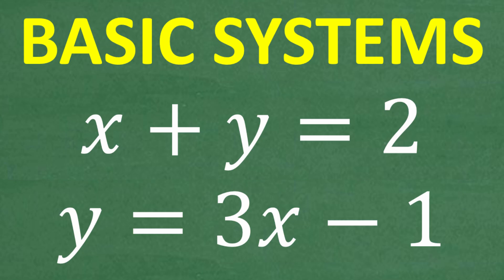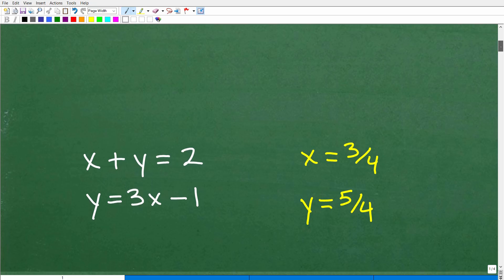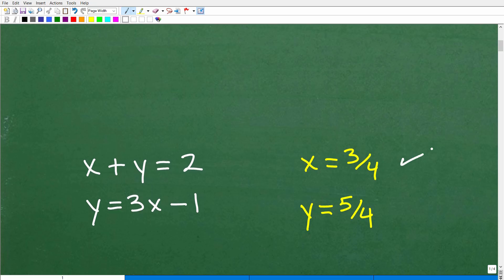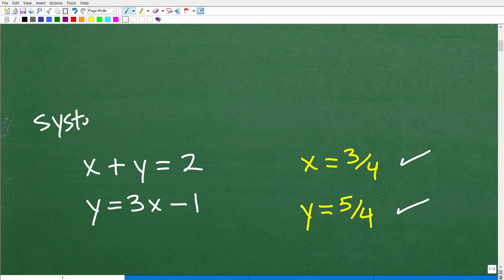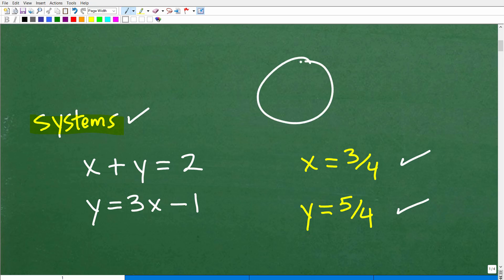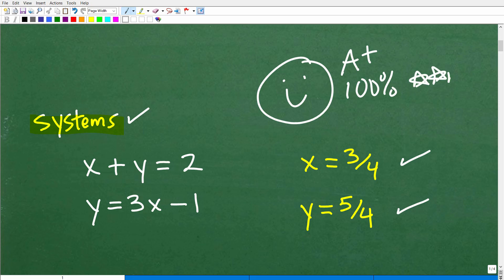So let's get into the solution. The answer is x is equal to 3 fourths, and y is equal to 5 fourths. But the other question was: what is the big picture topic we're looking at here? Hopefully you said systems, or two-variable systems, or two-variable linear systems. As long as you have the word systems, you get full credit.